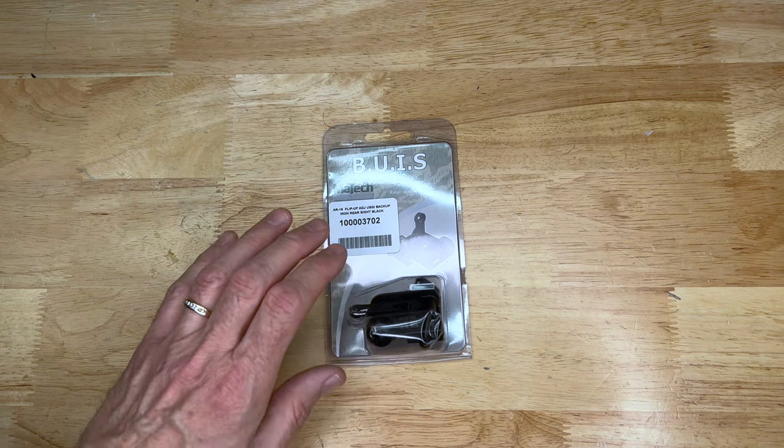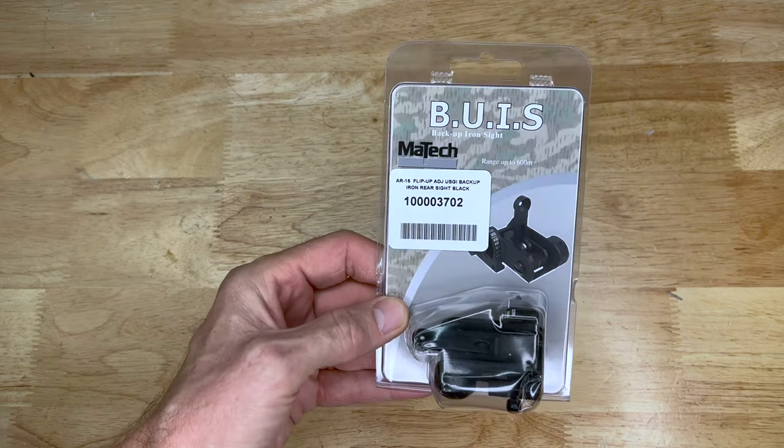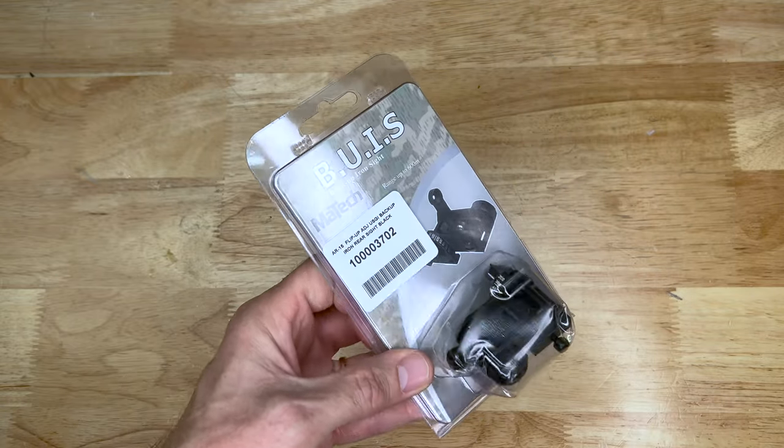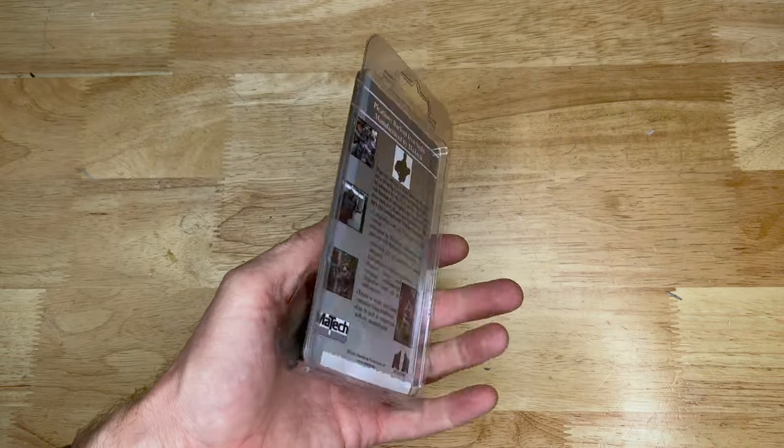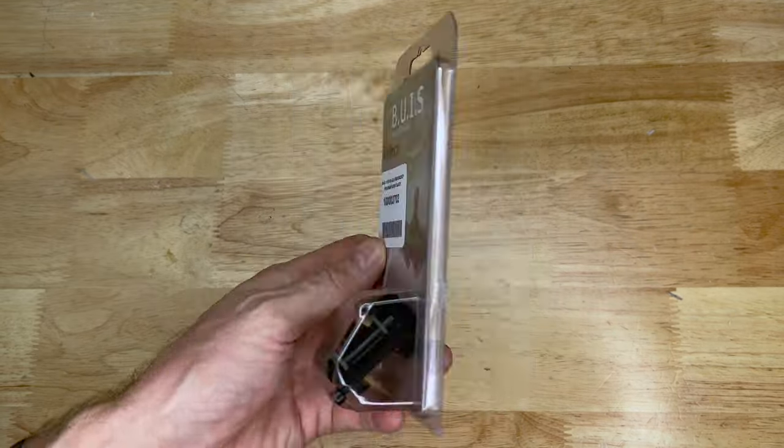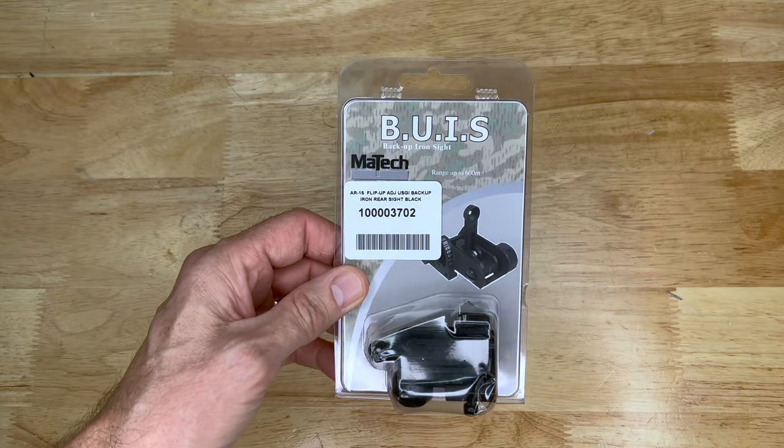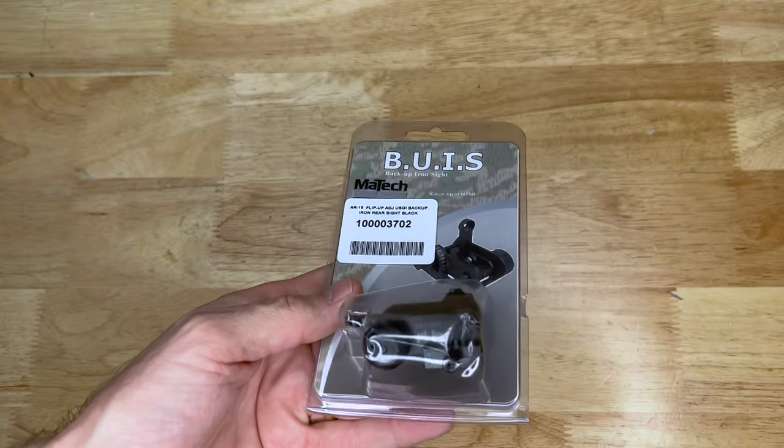So I recently picked up this backup sight from Brownells. This is the MaTech backup sight system. This is a rear backup sight only. Since I'm doing kind of a M16 A4 clone project, there's a couple different backup sights that I've seen over the years of that particular setup used in our military, and this is one of the most common backup sights that I have seen.